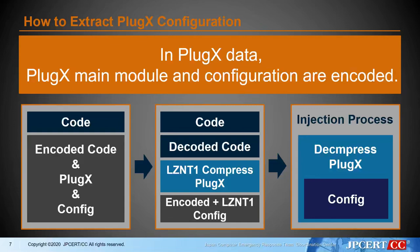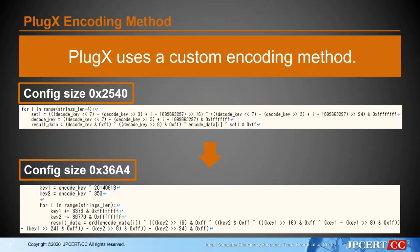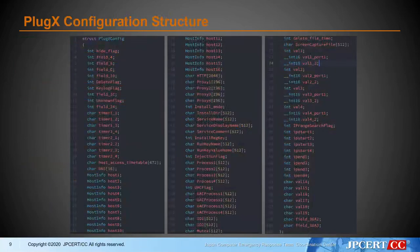For example, in the case of PlugX, the PlugX main module and configuration are encoded with an original algorithm and LZNT1. All decoded data is injected into one process and runs. PlugX uses a custom encoding algorithm depending on the version, which is used to encode keylog files, modules, and configuration data. Configuration structure also differs by version, and PlugX has a maximum configuration data size of 0x36A4.